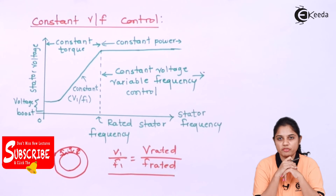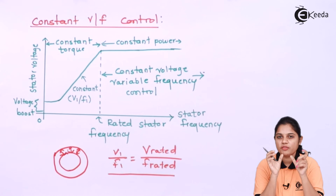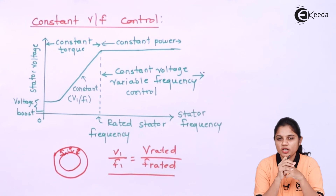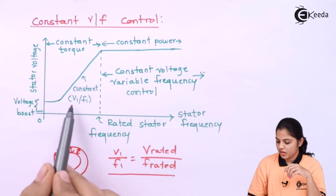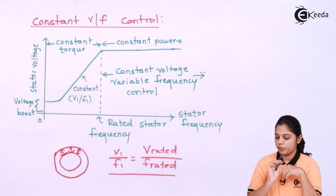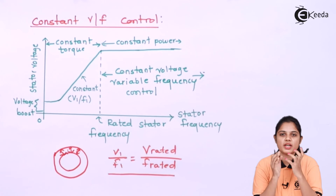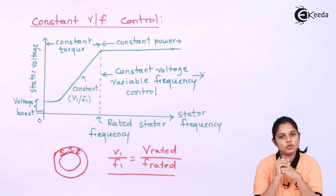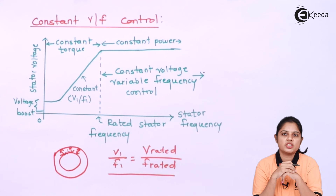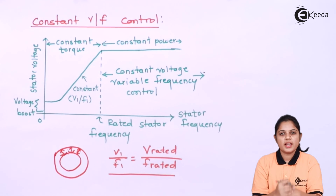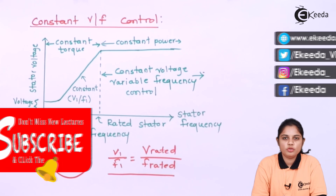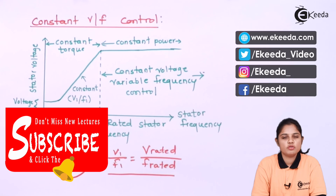That is the constant V by F control. If you want to control the speed or torque of the motor, you can use the region up to rated stator frequency — by keeping the voltage-to-frequency ratio constant, you can change the speed of the motor. Thank you for watching, stay tuned to Ekida, do subscribe.